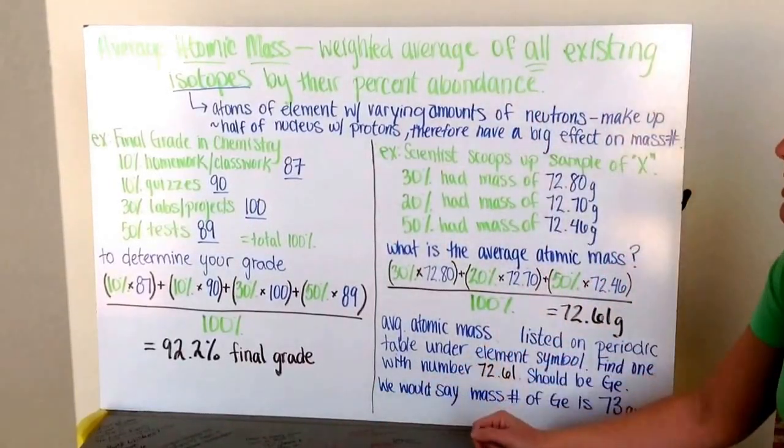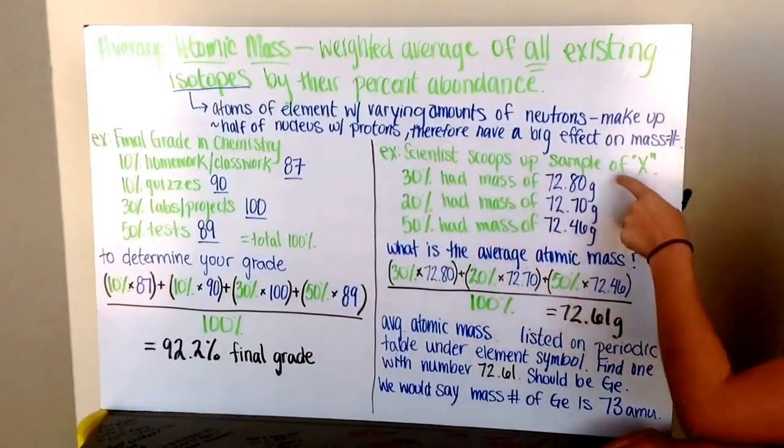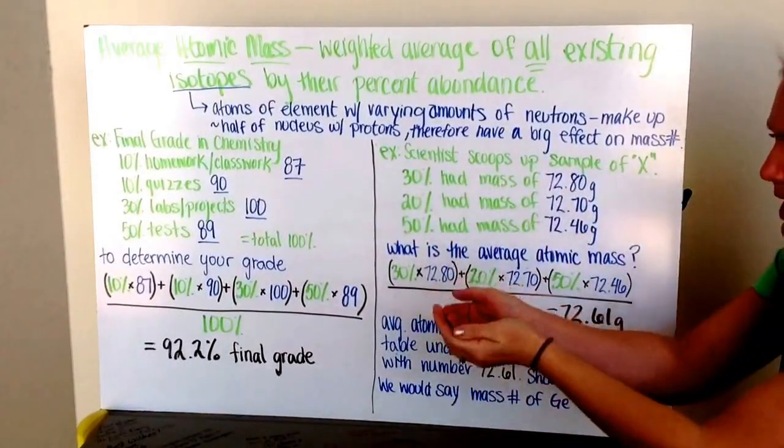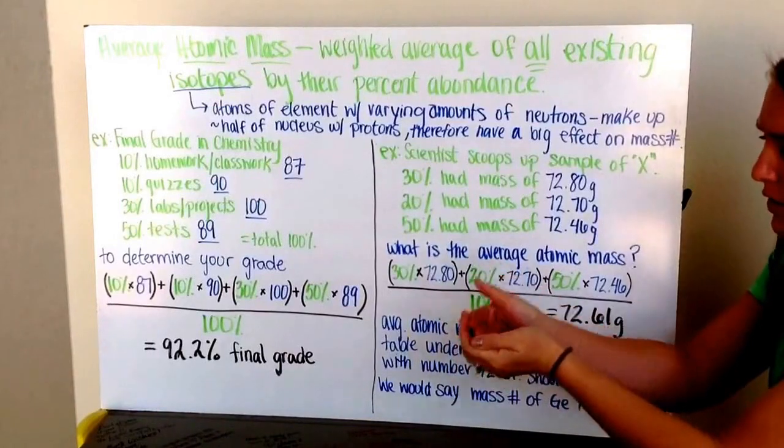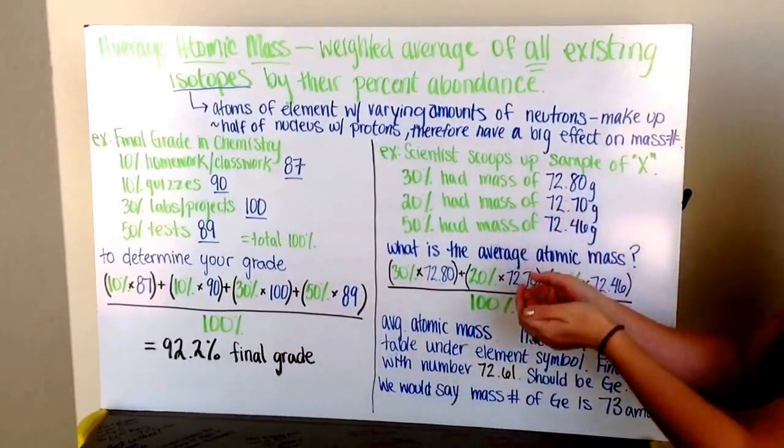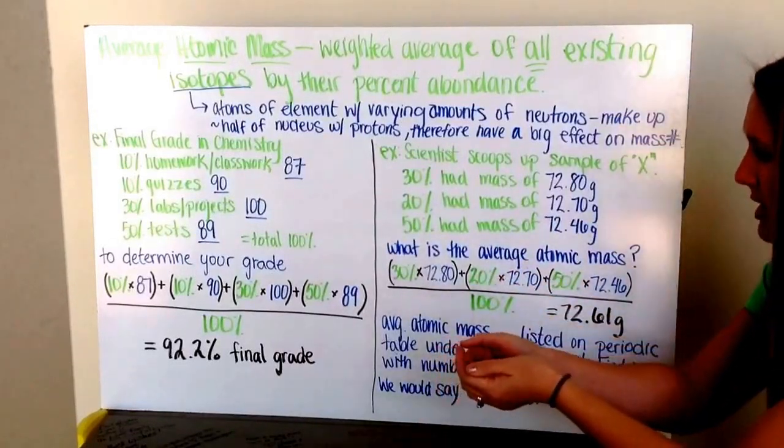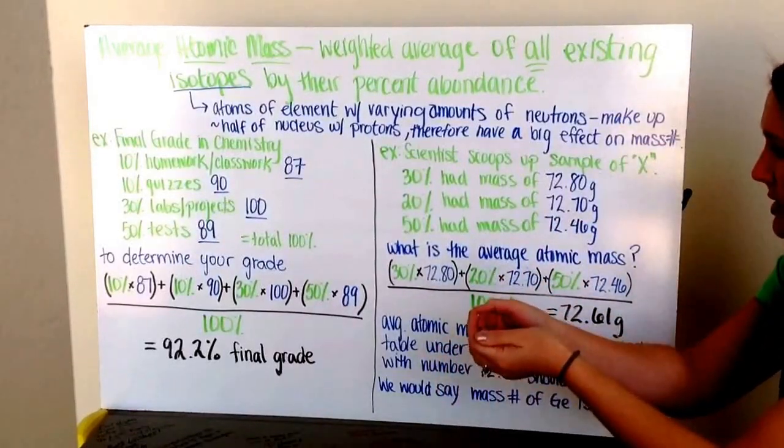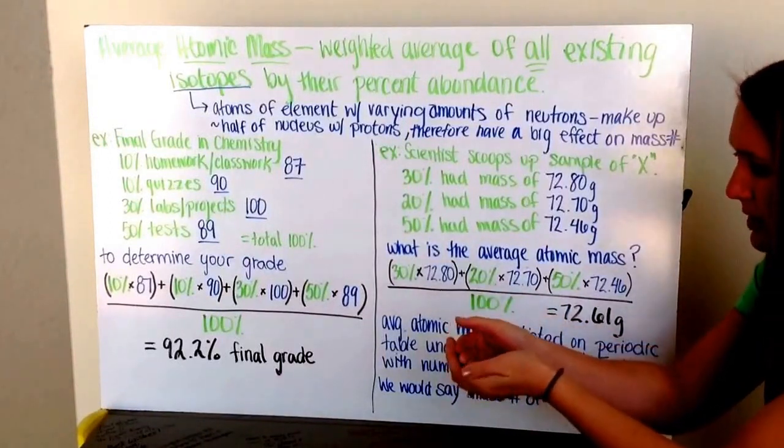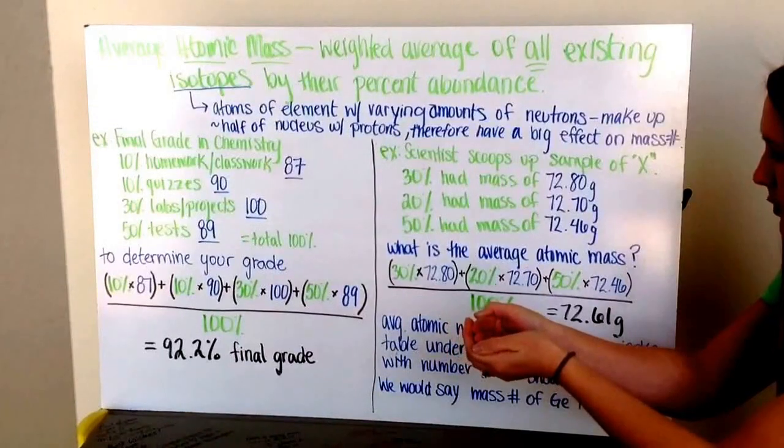Let's apply this to isotopes. A scientist scoops up a sample of element X. 30% of this sample weighs 72.8 grams, 20% has a mass of 72.7 grams, and 50% has a mass of 72.46 grams.